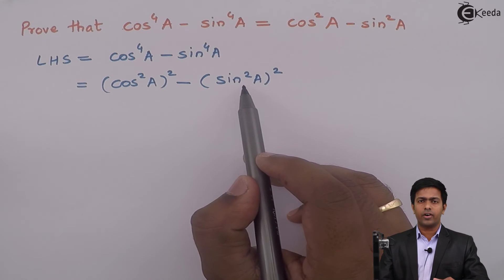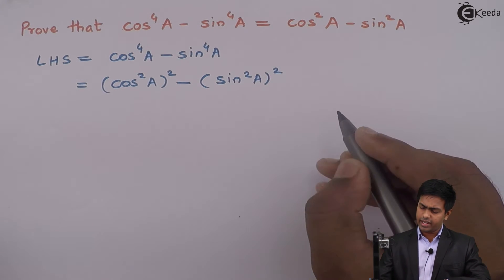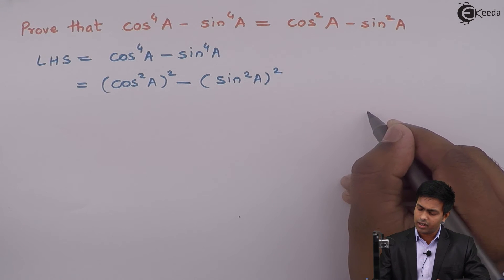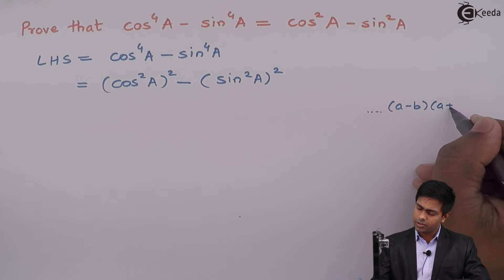And now, if you will observe carefully, then here we can see one formula. And what is the formula? The formula is A minus B, A plus B is equal to A square minus B square.